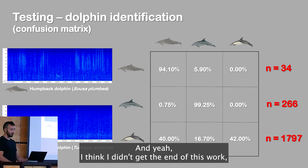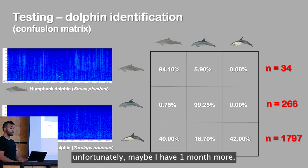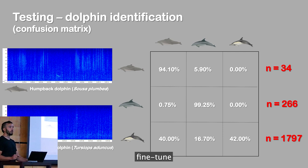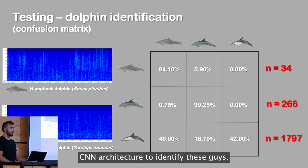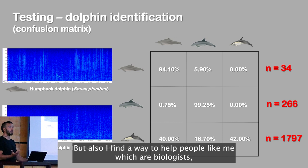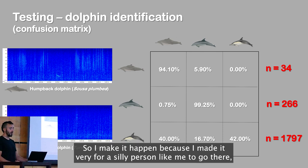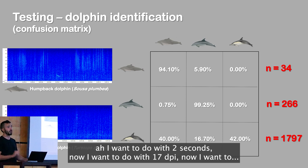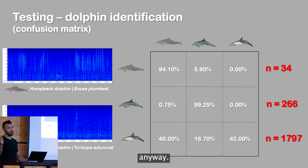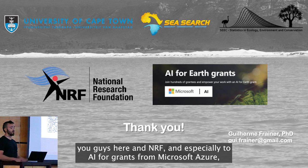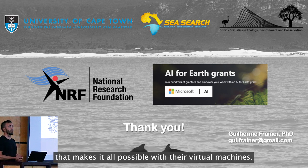I didn't reach the end of this work unfortunately — maybe I have one year, not more. But I definitely found a way to fine-tune a CNN architecture to identify these species, and also a way to help people like me — biologists, not computer engineers — to navigate the decision-making process around parameters like window size and image resolution. I want to thank my team, everyone here, NRAF, and especially Microsoft Azure for providing virtual machines that made all of this possible.